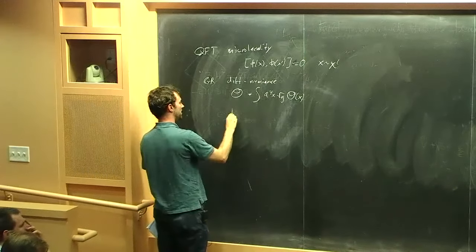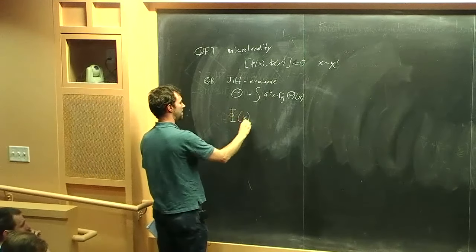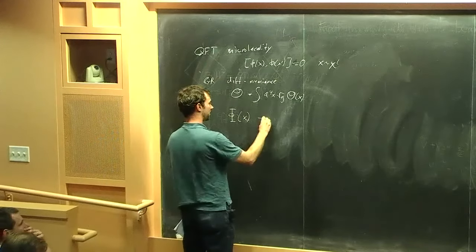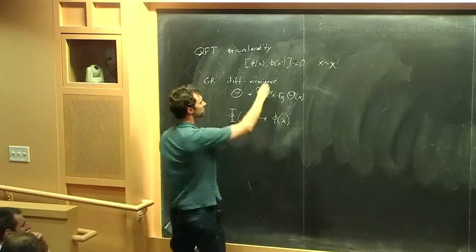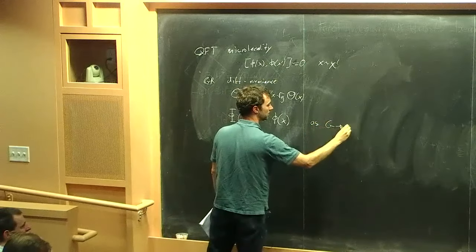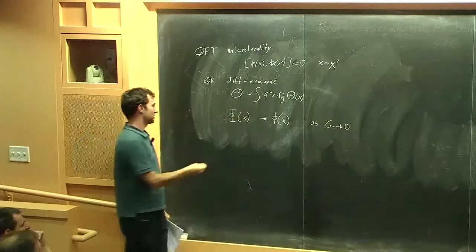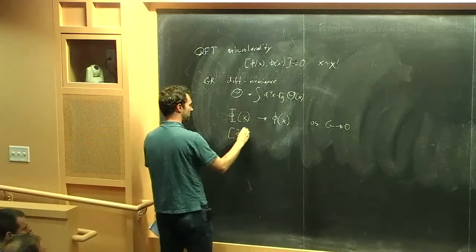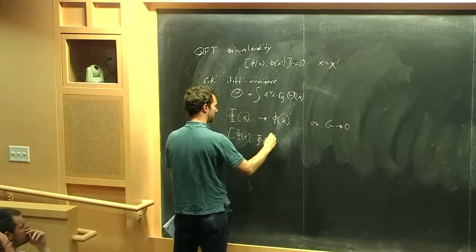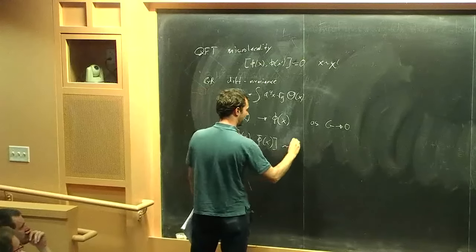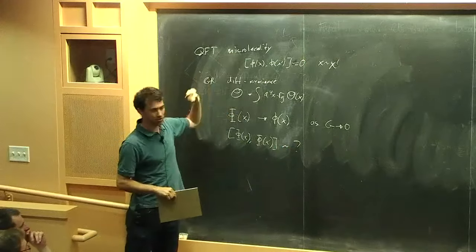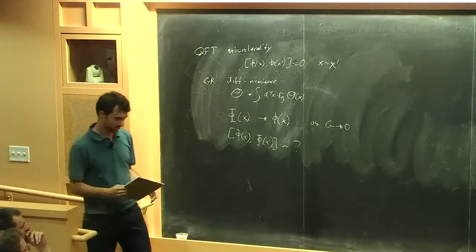The question is: can we define a capital-Phi operator as a gravitationally-dressed version of the local phi operators, which becomes local when gravity is weak? How close can we get to satisfying microlocality? What sort of diffeomorphism-invariant operators can we construct to approximate local operators, and at what order do corrections appear?